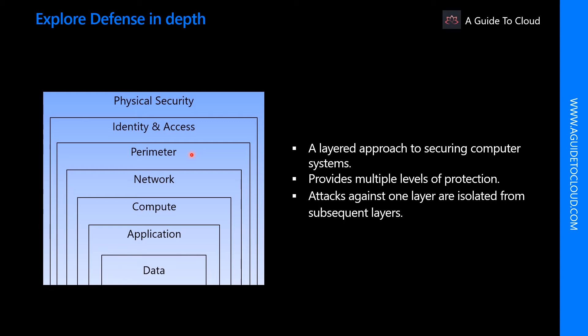The networking layer limits communication between resources through segmentation and access controls. The compute layer secures access to virtual machines. The application layer ensures that applications are secure and free of vulnerabilities. Finally, in almost all cases attackers are after the data — stored in a database, on a disk inside a virtual machine, in a SaaS application such as Office 365, or in cloud storage.